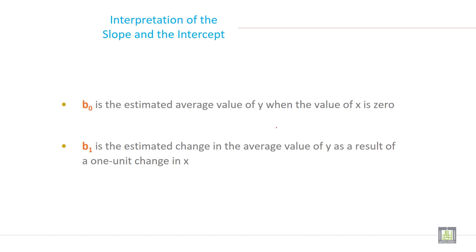Interpretation of the slope and the intercept: B0 is the estimated average value of y when the value of x is zero. And B1 is the estimated change in the average value of y as a result of a one unit change in x.